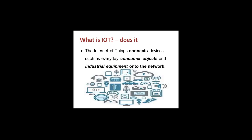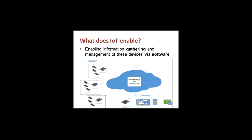The Internet of Things connects devices — consumer objects and industry equipment — onto the network. The objective is to connect everything: computers, headsets, microphones, everything connected to the internet. Anything that is a device can be connected — your bracelet, your car, your home TV — provided it has some kind of addressable mechanism. What you connect to the Internet of Things is limited only by your imagination. Once connected, IoT enables information gathering and management of these devices via software. For example, I can connect my car to a network using sensors, collect health information about my car, and send it to the manufacturer or service provider.